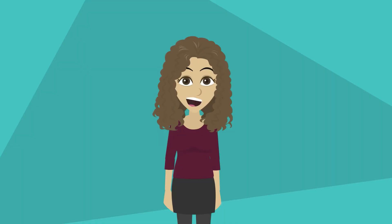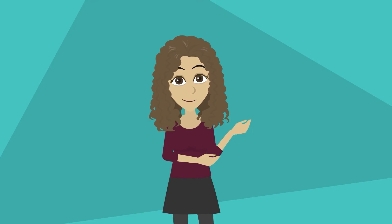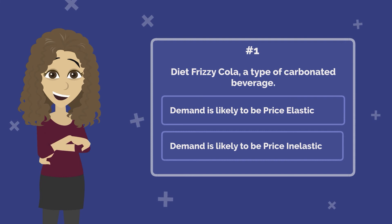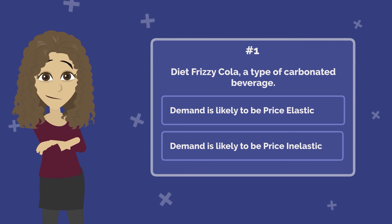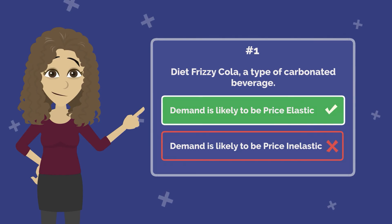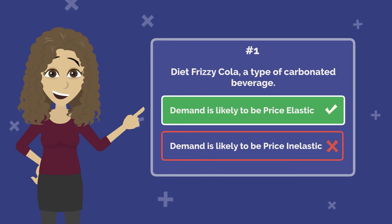Now let's see if you can identify whether a good is likely to be elastic or inelastic, and which factor of elasticity is likely to have the biggest effect. Number 1: Diet frizzy cola, a type of carbonated beverage. Answer: Demand is likely to be price elastic. Why? Because there are many substitutes for diet frizzy cola, a specific brand of soda pop.